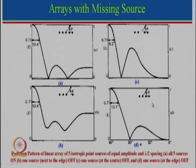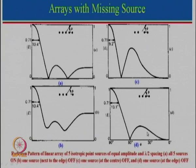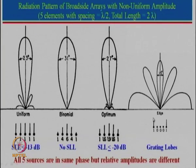Let us take one last case where the last element is not fed. When the last element is not fed, the whole array is equivalent to a four-element array, and we know that for a four-element array the half-power beam width will be more and there will be just one complete side lobe, which you can see from the array plots.